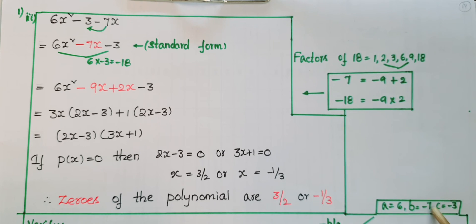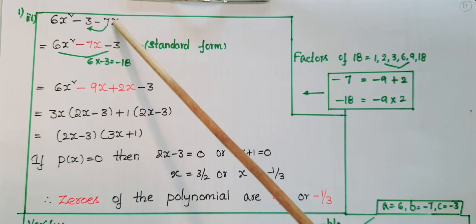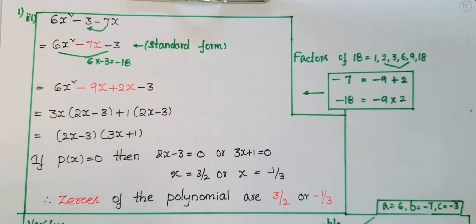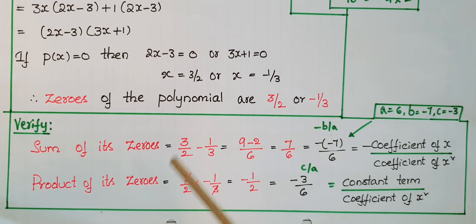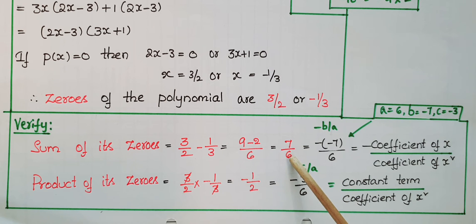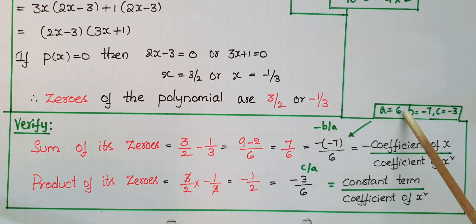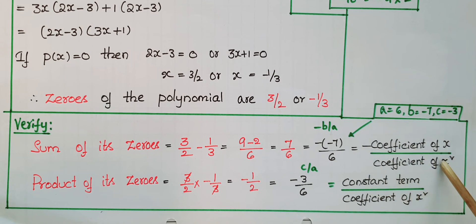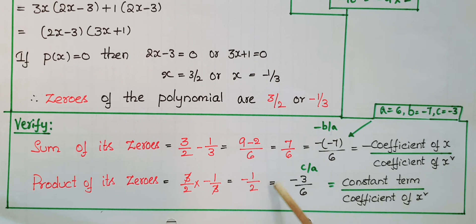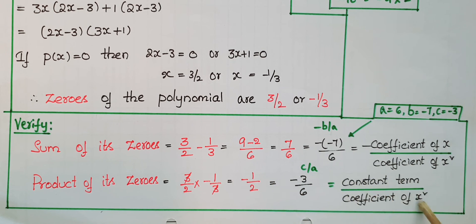Here a = 6, b = -7, c = -3. Sum of zeros = 3/2 + (-1/3) = 7/6. And -b/a = -(-7)/6 = 7/6, verified. Product of zeros = (3/2) × (-1/3) = -1/2. And c/a = -3/6 = -1/2. Product equals constant term by coefficient of x², verified.